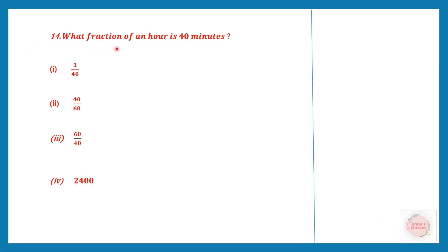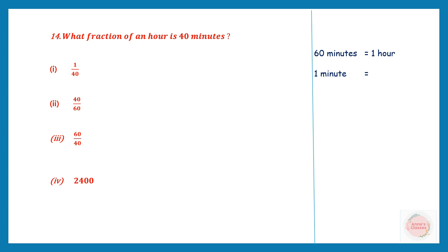Question 14. What fraction of an hour is 40 minutes? We know 60 minutes make up 1 hour. We want to know what 40 minutes makes. We apply the unitary method: 60 minutes make 1 hour, so 1 minute makes 1/60 of an hour.